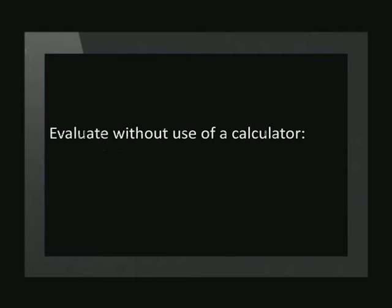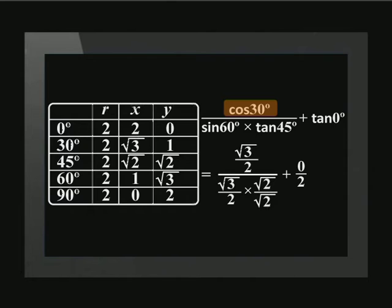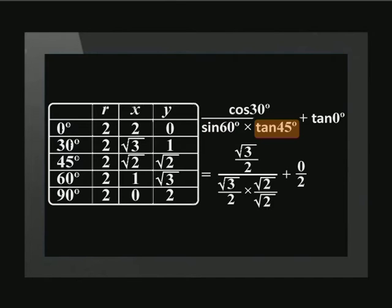Evaluate without the use of a calculator: cos 30 degrees over sin 60 degrees, times tan 45 degrees, plus tan 0 degrees. Let's go back to the table and replace the trig ratios with the values. Cos 30 degrees is root 3 over 2, sin 60 degrees is also root 3 over 2, tan 45 degrees is root 2 over 2, and tan 0 degrees is 0 over 2.